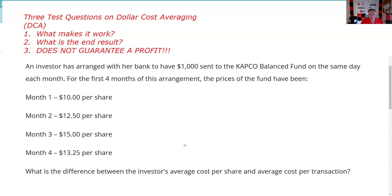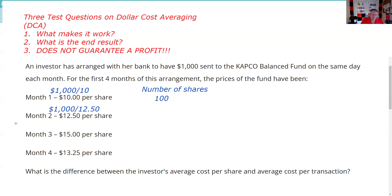For the first month of this arrangement, the prices of the fund have been $10, $12.50, $15, and $13.25. In month one, a thousand dollars divided by $10 gives us 100 shares. It goes up to $12.50, and we cut back on our purchases — just like in a supermarket when prices go up, you'd buy less. In the securities industry, it's unusual that people actually like buying at higher and higher prices.